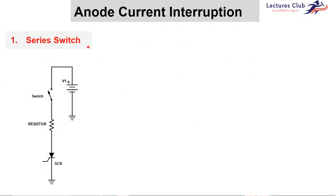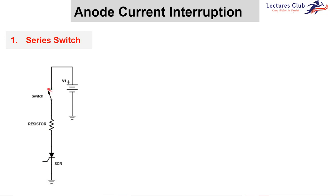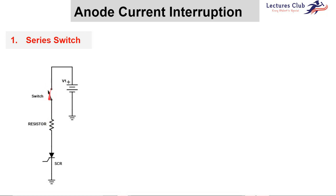The first method to turn off SCR is the anode current interruption method. In this method, we bring down the anode current below the holding current. The first technique within this method is the series switch. In this method, we connect a switch in series to the SCR. This switch is not an ordinary switch — it is an electronically controlled switch, which is usually a BJT, MOSFET, or any other switch. So to turn on and off an SCR, we need this switch in series to the SCR.